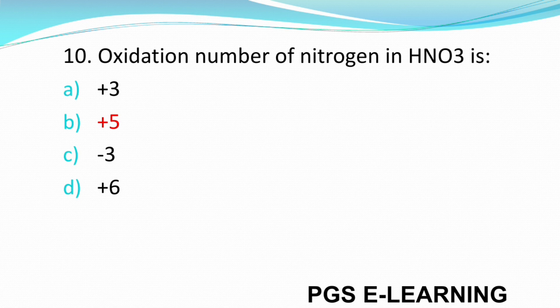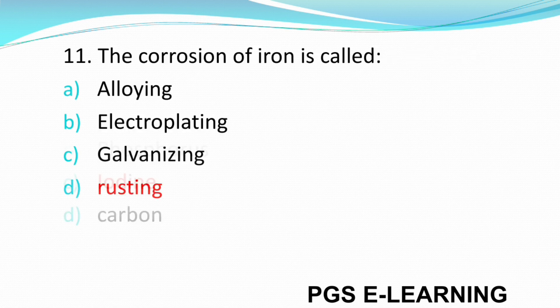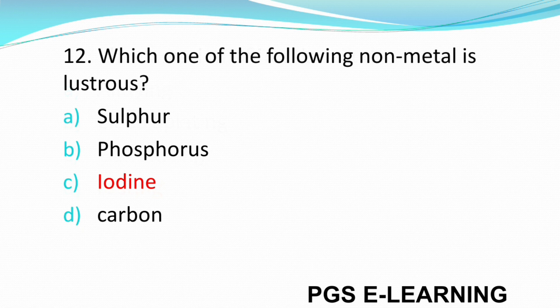Q9: The concentrated solution of common salt in water is called brine. Q10: Oxidation number of nitrogen in HNO3 is +5. Q11: The corrosion of iron is called rusting. Q12: Which one of the following non-metals is lustrous? Correct answer is iodine.